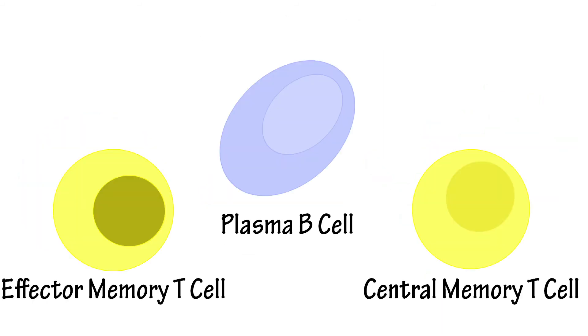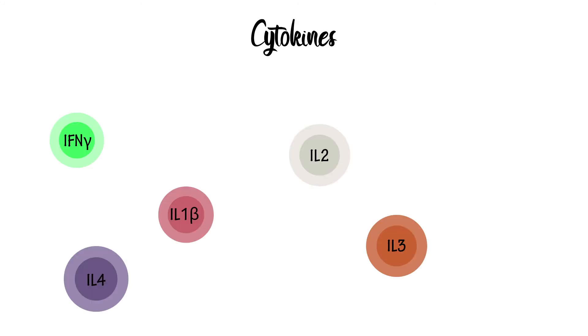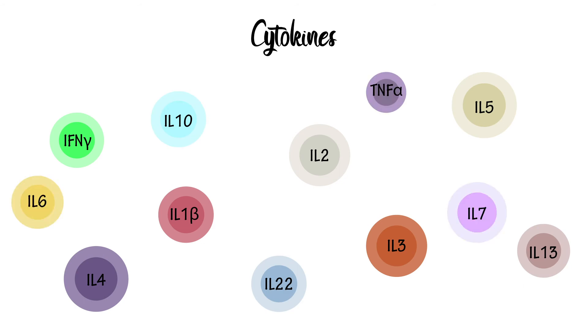Both T and B cells play a major role in memorizing pathogens, to initiate a quicker response in the future. The coordination of all these responses depends heavily on signaling between cells, in the form of cytokines. Cytokines are a general term for small protein-like molecules, such as interleukins.